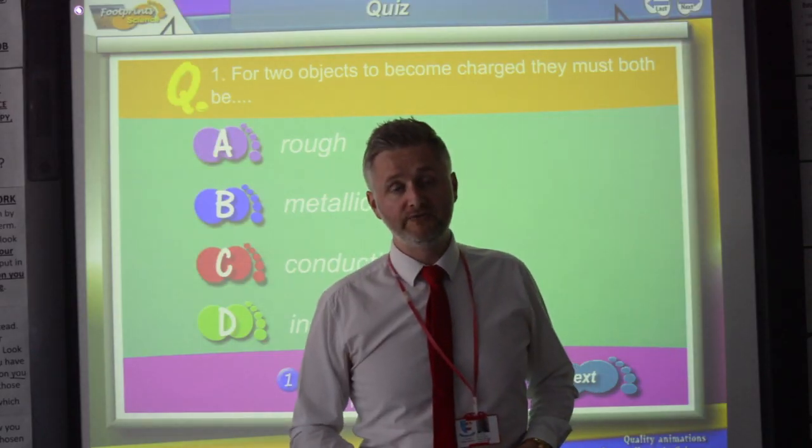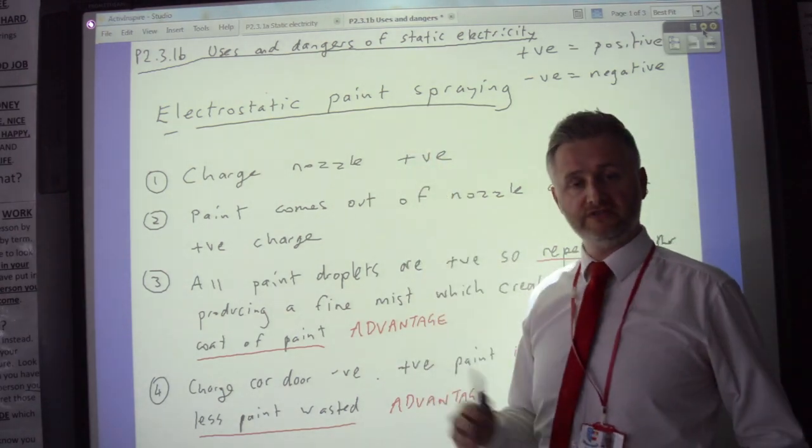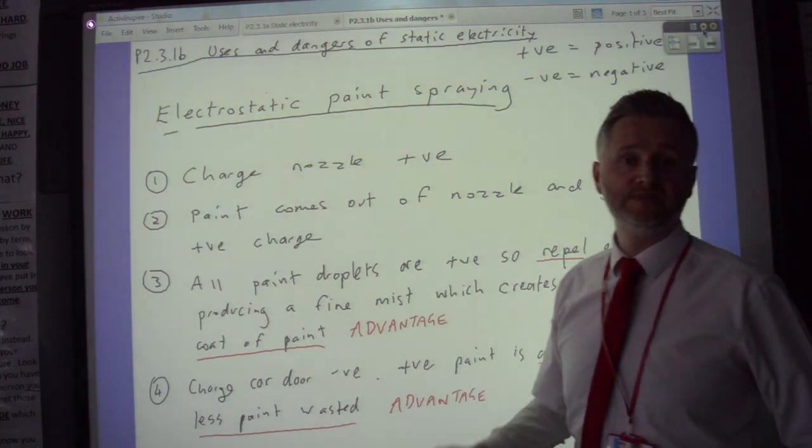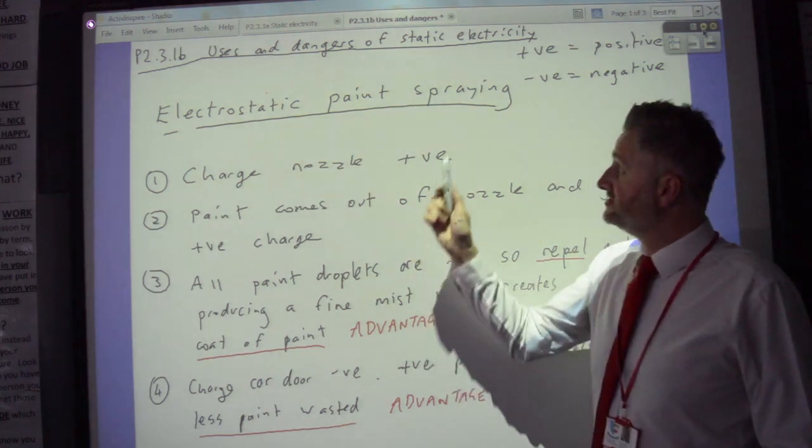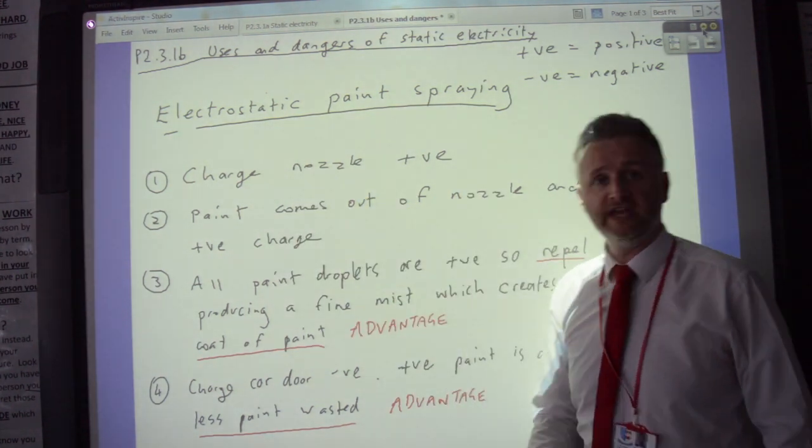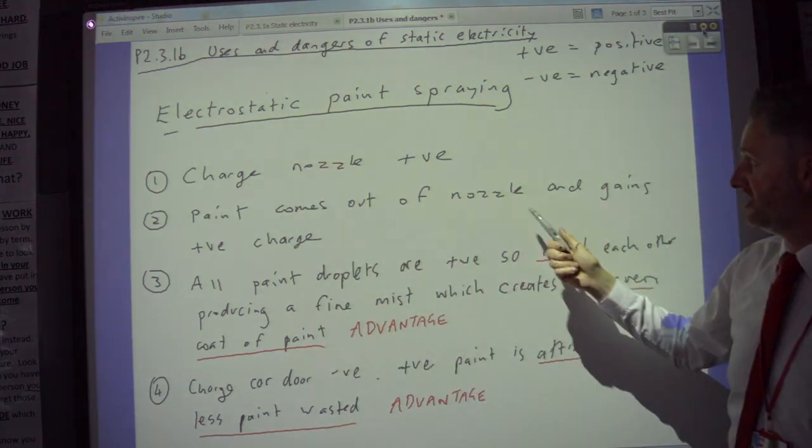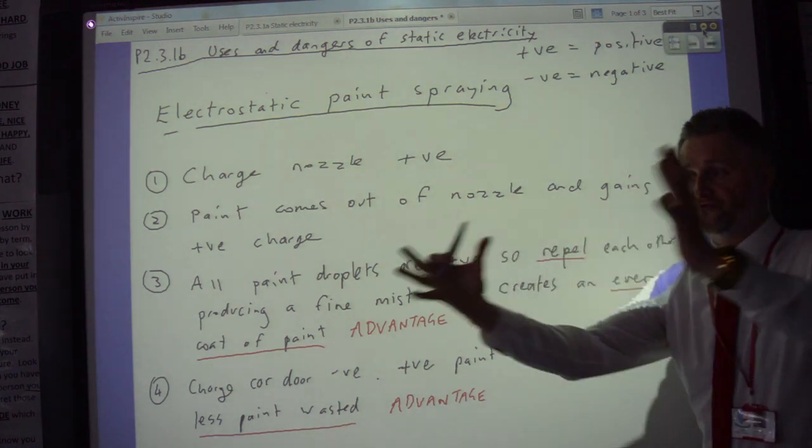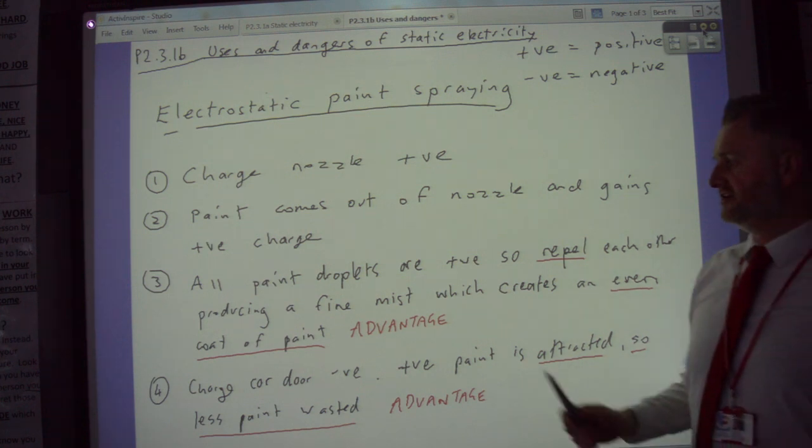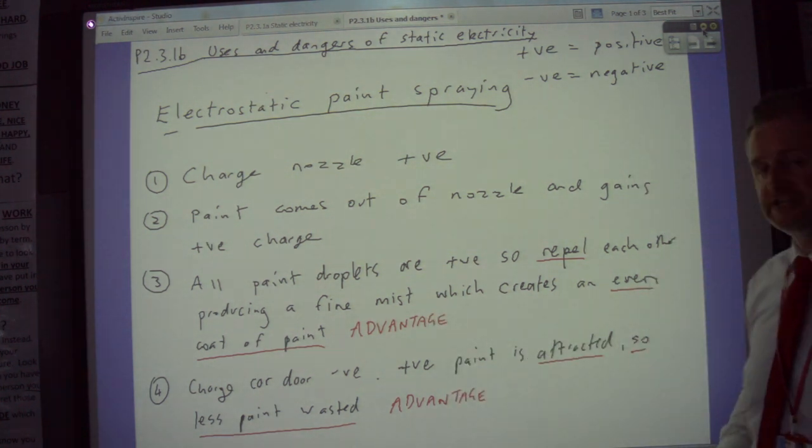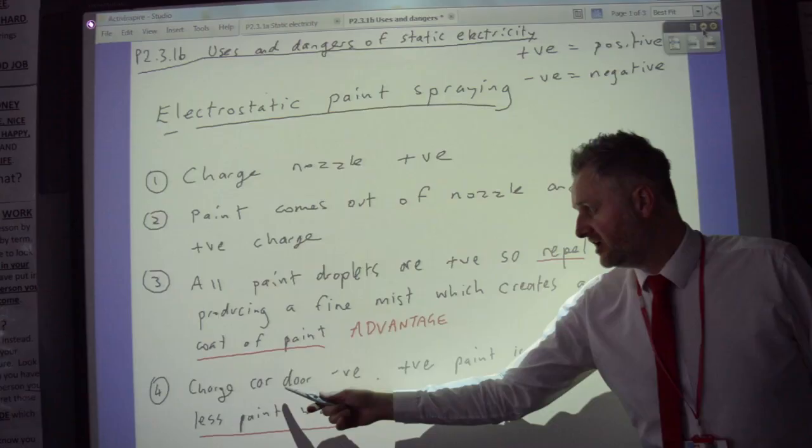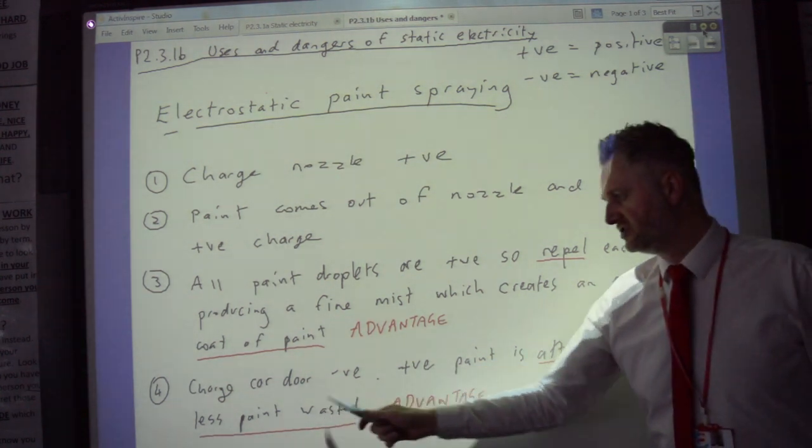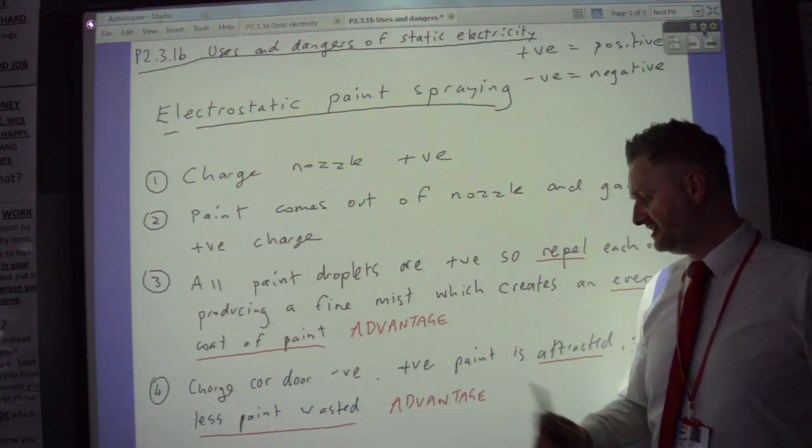I'll tell you about how electrostatic paint spraying works. Now this is electrostatic paint spraying. So this is how to use electrostatics to spray a car door or anything like that really. Or sometimes we use these to spray crops. It's slightly different for spraying crops. So first thing, charge the paint spraying nozzle positive. And then when the paint comes out of the paint spraying nozzle, all of the paint will be positive. The paint droplets are going to repel each other then. And that will produce like a fine mist, which creates an even coat of paint. Tell the examiner that that would be an advantage. So you don't get streaky paint. And the last thing is to charge the car door negative. And then the positive paint will be attracted so you'll waste less paint. And that is another advantage.